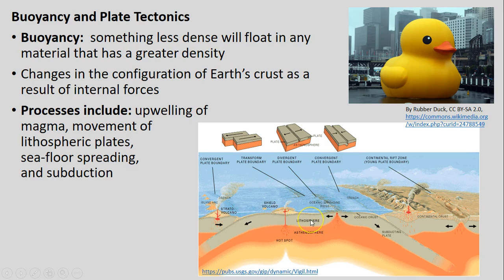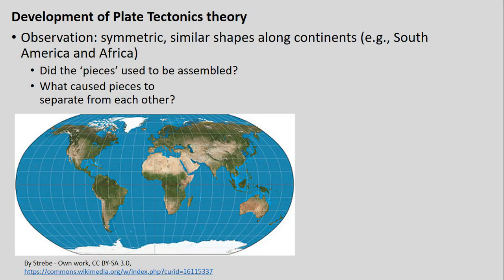Over hundreds of thousands, millions, and hundreds of millions of years, the configuration of Earth's crust changes as a result of internal forces moving the rocks that lie on top. The rocks we stand on — the lithosphere — sit above inner layers: the asthenosphere and further down, the mantle. Upwelling of magma from inside Earth circulates over long time scales, driving the movement of lithospheric plates through seafloor spreading and subduction.